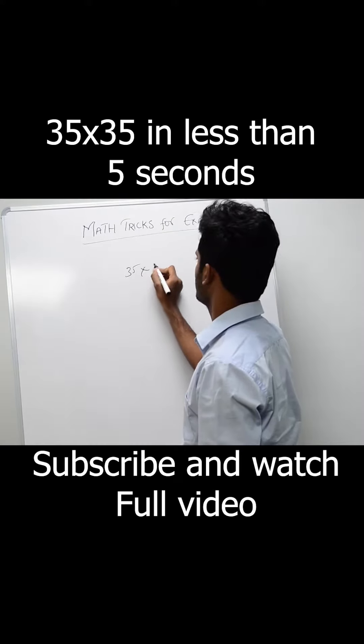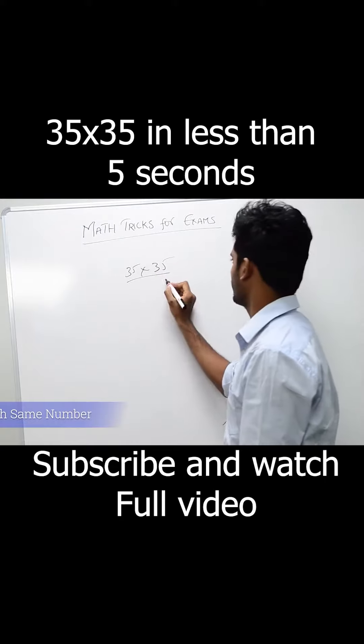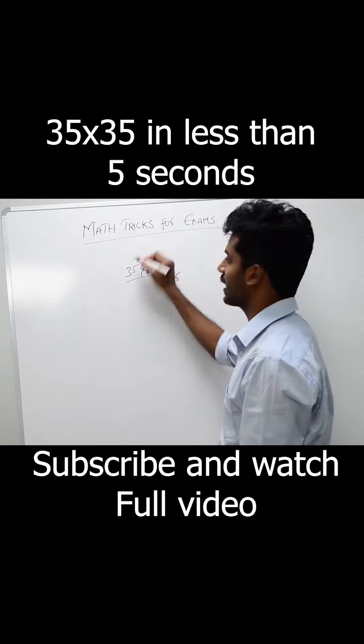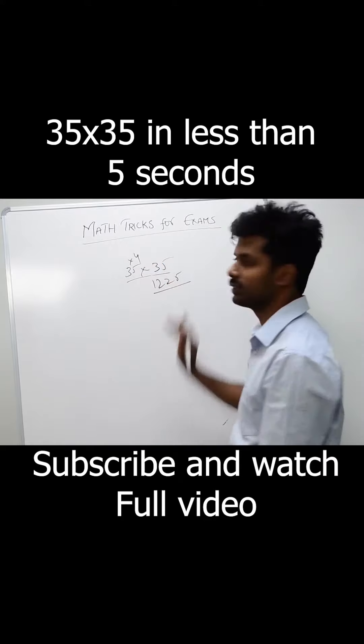What is 35 times 35? Don't solve it. 5 times 5 is 25, and 3 times the next number, which is 3 times 4, equals 12. That's it.